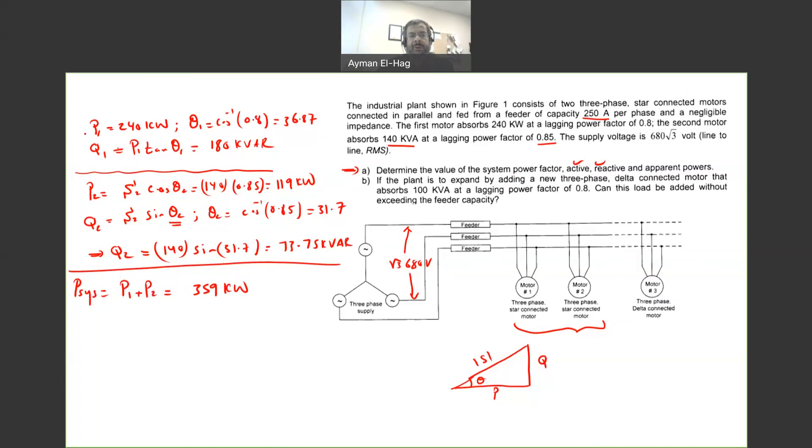And if you add these two quantities, you will get your total power, which is 359 kilowatt. Your Q of the system is equal to Q1 plus Q2. So we just add Q1 and Q2, and you will get the value of 253.75 kVAR.